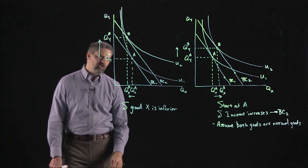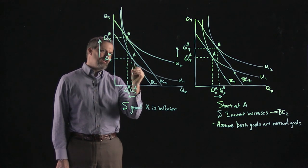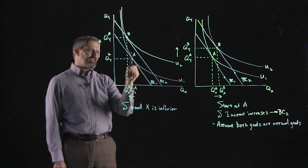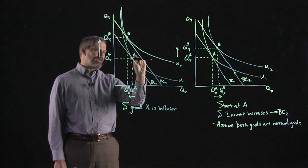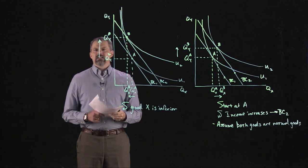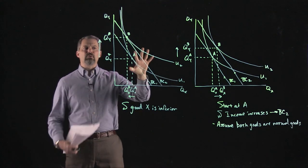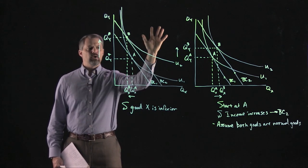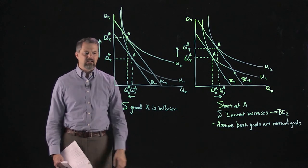If we wanted good Y to be the inferior good instead, the new point of tangency would need to be somewhere below point A, where the consumer buys less good Y and more good X. So if good X is inferior, the tangency is to the left of A; if good Y is inferior, the tangency is below A. In three dimensions, a utility function where good X is inferior would slope relatively slowly in the X direction but very steeply in the Y direction.